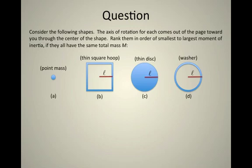We'll imagine a point mass, just something that's absolutely as tiny as a speck, a square hoop, a thin disk, and a washer. The hoop and the washer have their mass uniformly distributed around the perimeter of these objects, and the thin disk has its mass distributed throughout the disk.